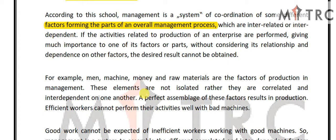For example, man, machine, money, and raw material are the factors of production in management. Man refers to your labor, workers, employees, and staff. Machine refers to what you use in production in any industry. Money is also an important factor for any organization. And raw material is what you use to develop your product.